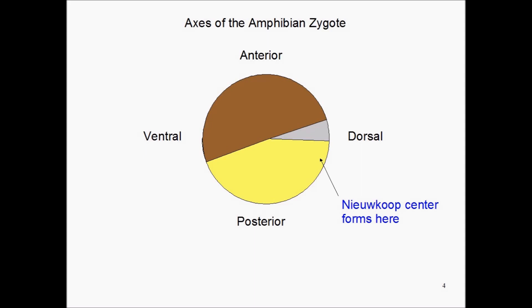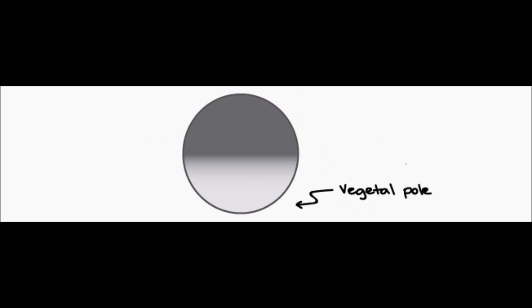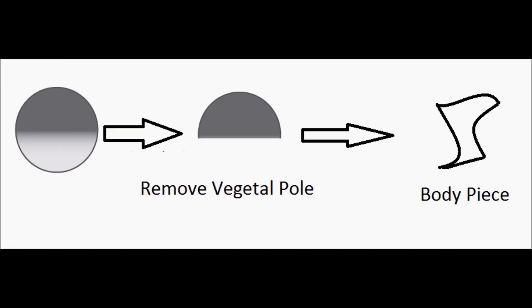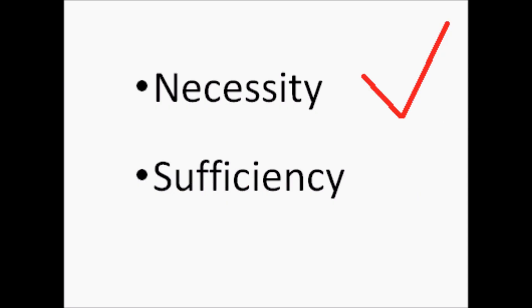Years later, we could use molecular techniques to determine what is in the vegetal pole before rotation and what is in the future dorsal side. We look at the vegetal pole because it is necessary and sufficient for dorsalization. Removing the vegetal pole of the oocyte will cause a ventralized embryo, but removing any other part will not. This shows necessity.